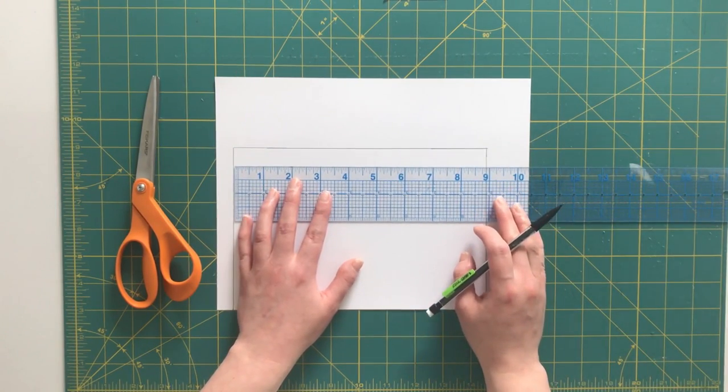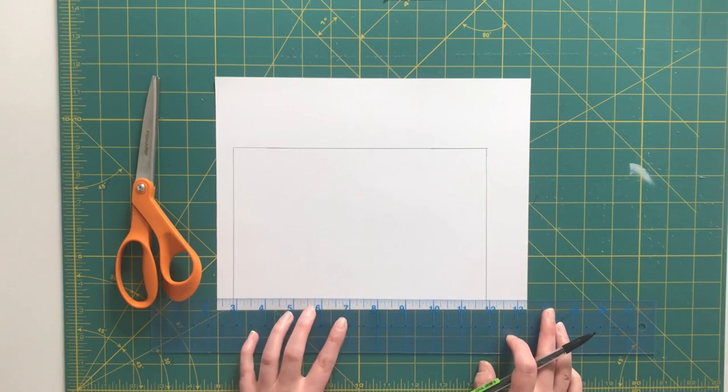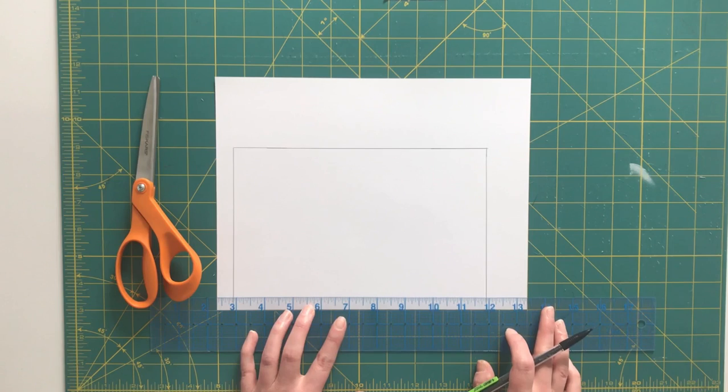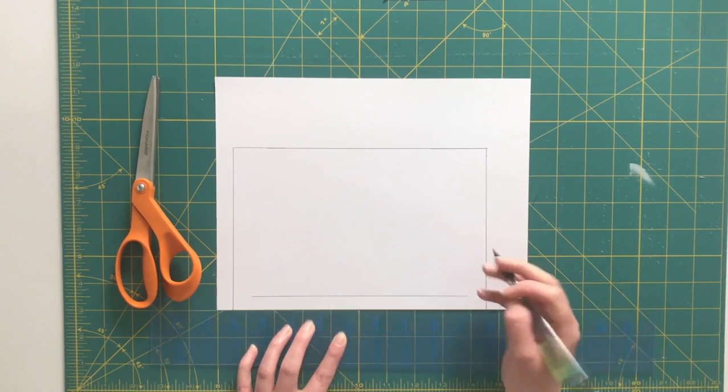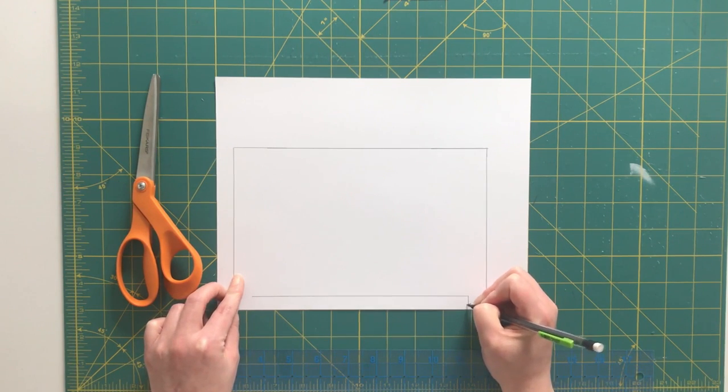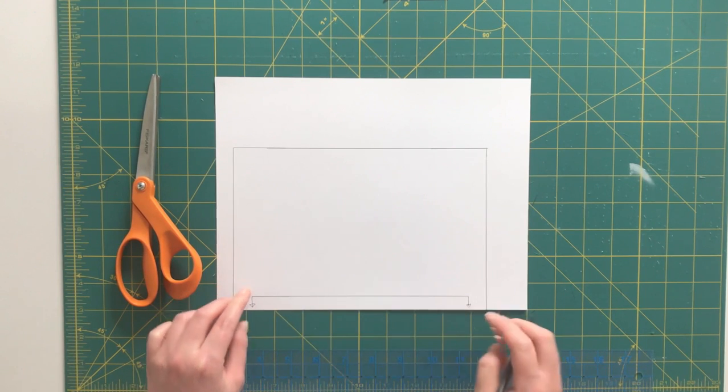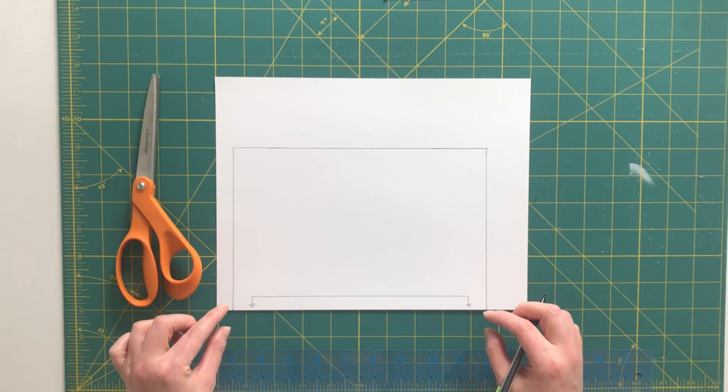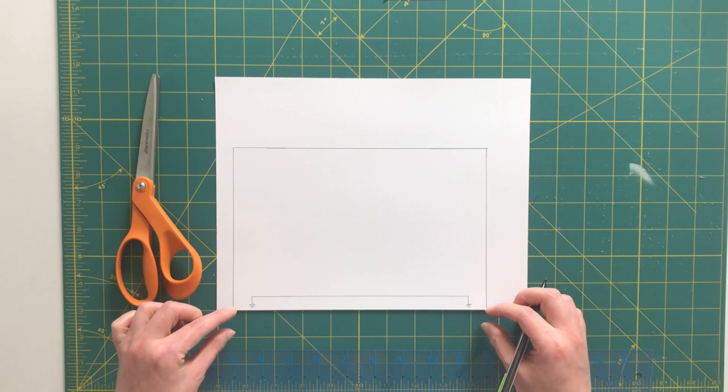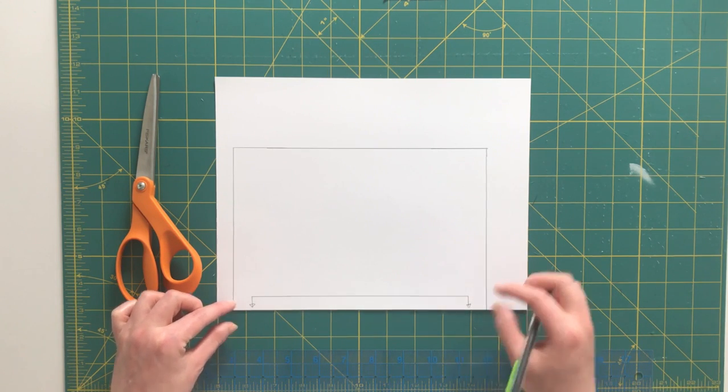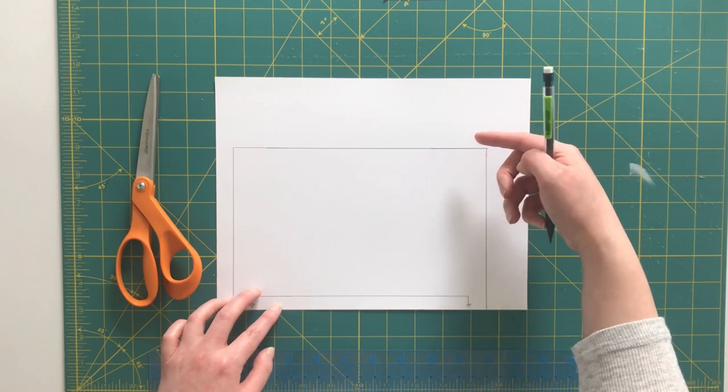And then I'm going to mark this bottom nine inch edge as being cut on the fold. If you're making these masks out of scraps of fabric and your fabric is less than 12 by nine inches, you are going to want to add an extra quarter of an inch along this length here so that you can cut out of two pieces of fabric.